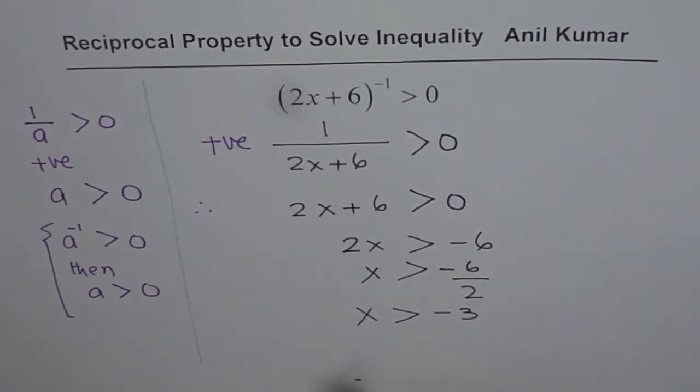So that is the solution and on a number line you can show this solution like this where this point here is minus 3.